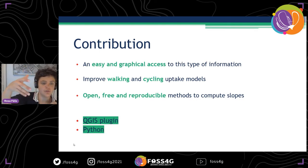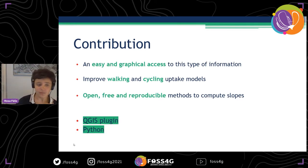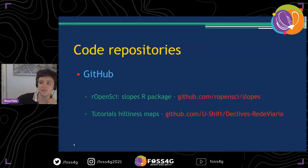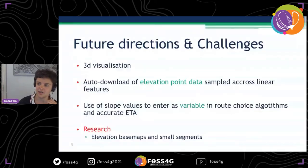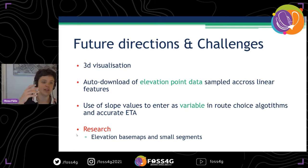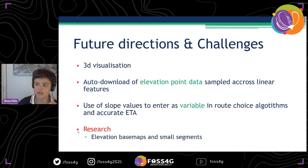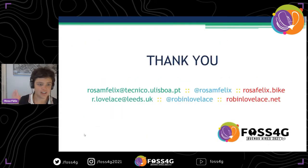We are open to contributions from others watching this — perhaps making this a QGIS plugin or a Python package. You can find this package at github.com/rOpenSci/slopes, and there are tutorials to produce hilliness maps at that link. We have some future directions and challenges, such as 3D visualization and auto-download of elevation points — getting vertex information directly rather than downloading the entire raster first — as well as some ongoing research challenges. Thank you, that was the presentation.